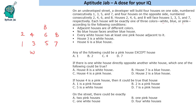The first question asks: any one of the following could be a pink house, except which one? Since house 6 is blue, the house opposite it cannot be blue or white, so it must be pink. Now, houses 1, 2, and 4 can all be pink — no condition stops them. However, house 7 cannot be pink because house 5 is already pink, and adjacent houses must be different colors. So house 7 is the answer.